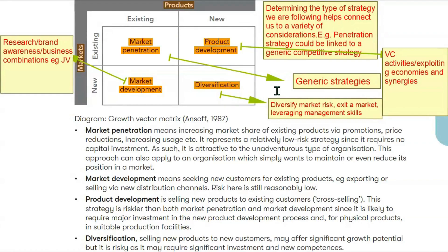Lots of companies also diversify into completely unrelated areas because they feel they have strong management skills — a business is a business. This is called conglomerate diversification, and it is used when a new industry is generating super-normal profits. Conglomerate diversification was very popular at one time, but is now less popular because studies have shown the returns are generally lower with this approach.